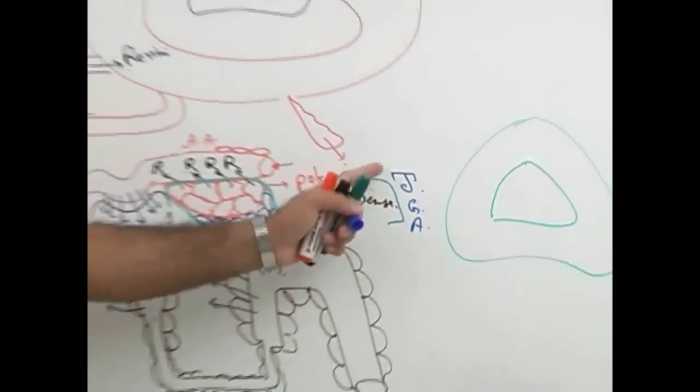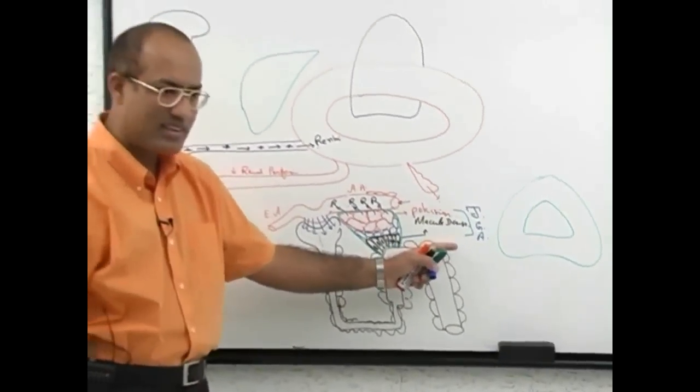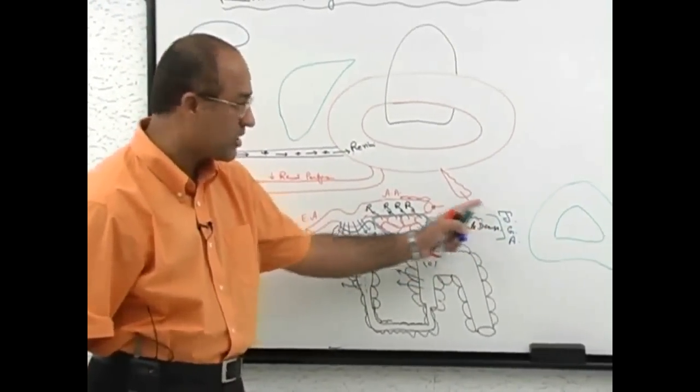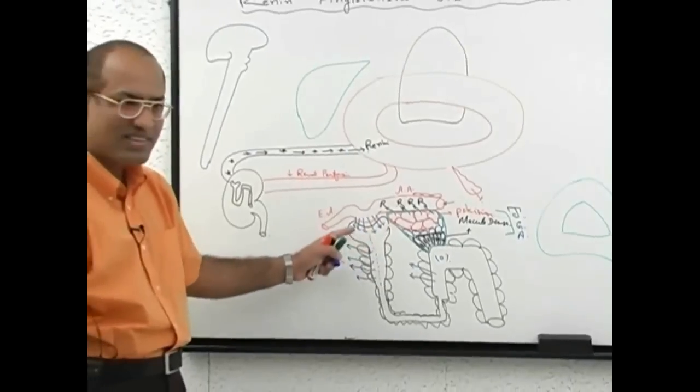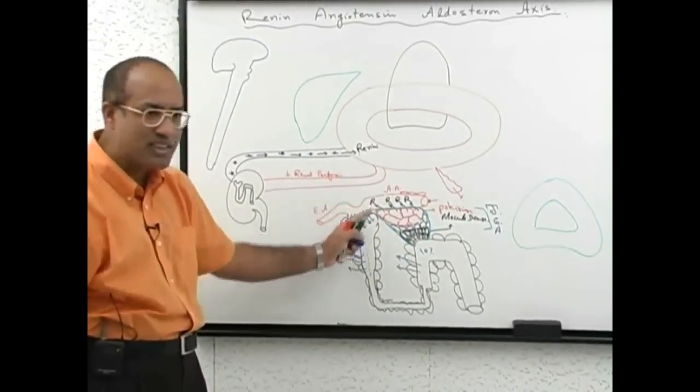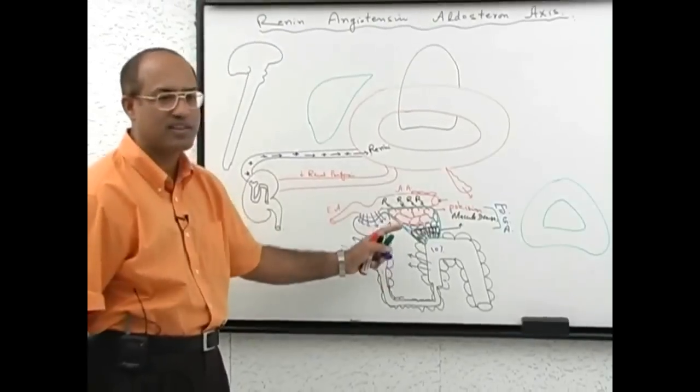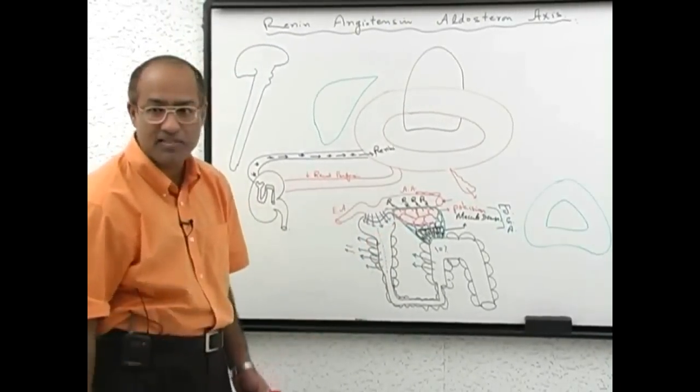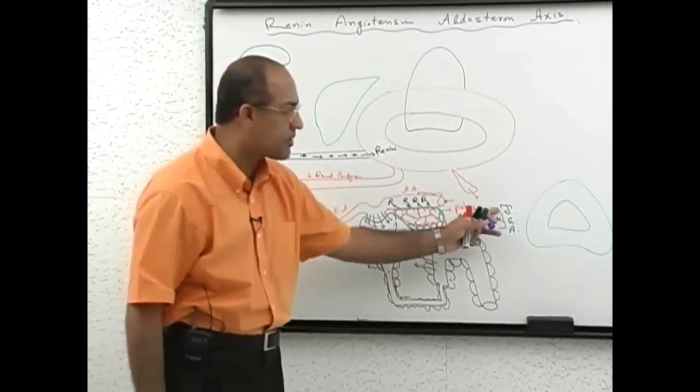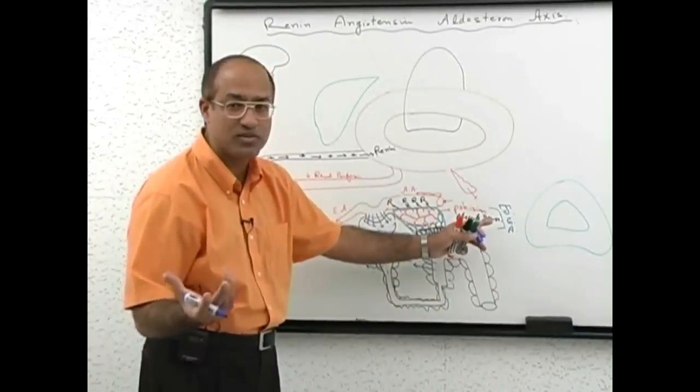Juxtaglomerular apparatus, just they call it a special apparatus, juxtaposed to glomerulus. With the glomerulus, there is a very special apparatus. Thank God they did not put a very complex name for it. They just say there is special apparatus. They never knew in the beginning what are its function. Now they know.